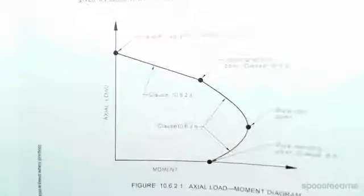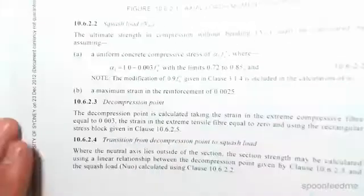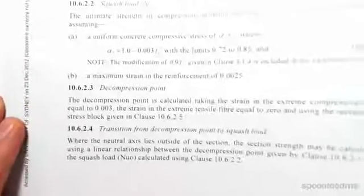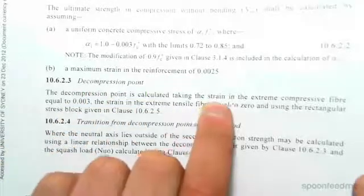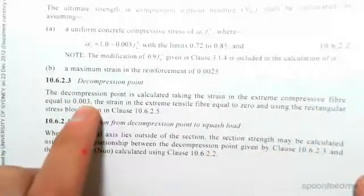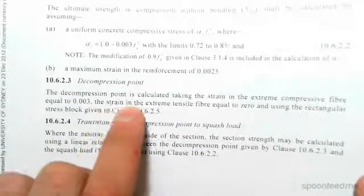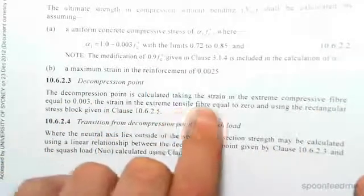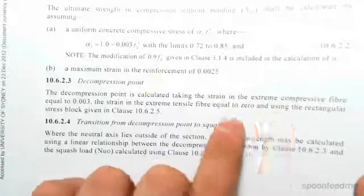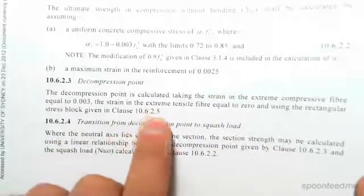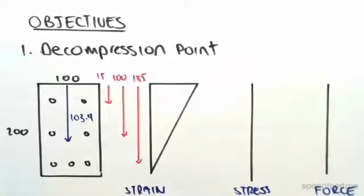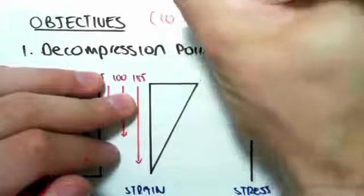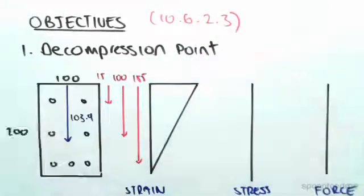So the decompression point, it says here, let me try to zoom in a bit for you guys. The decompression point is calculated taking the strain in the extreme compressive fiber to equal 0.003, the strain in the extreme tensile fiber equals zero, and using the rectangular stress block given in clause 10.6.2.5. Okay, so this decompression point is from 10.6.2.3.